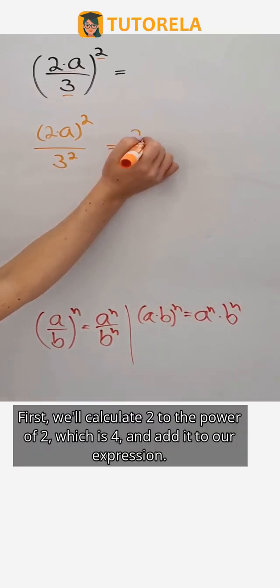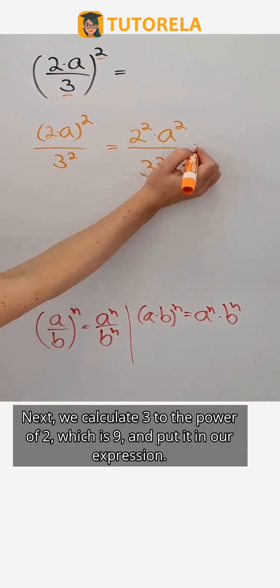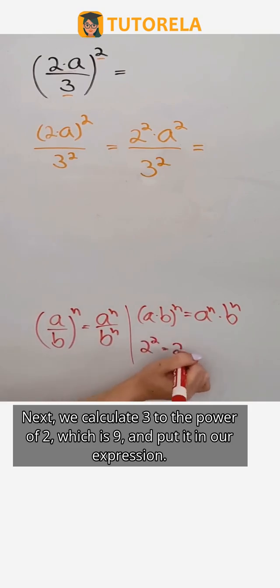First, we'll calculate 2 to the power of 2, which is 4, and add it to our expression. Next, we calculate 3 to the power of 2, which is 9, and put it in our expression.